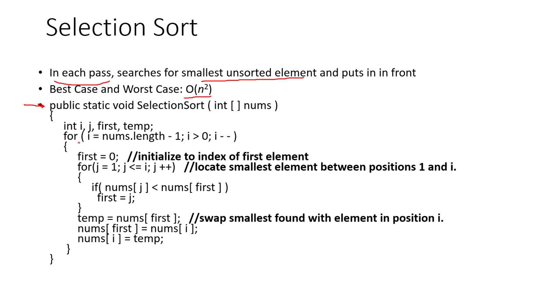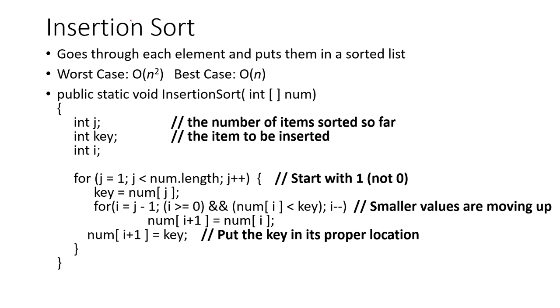Basically, we just go through the array. And then we locate the smallest element between positions one and i using this for loop in here. And we find the index that we're looking for. And then we perform our swap. That's the thing that puts it in the front.